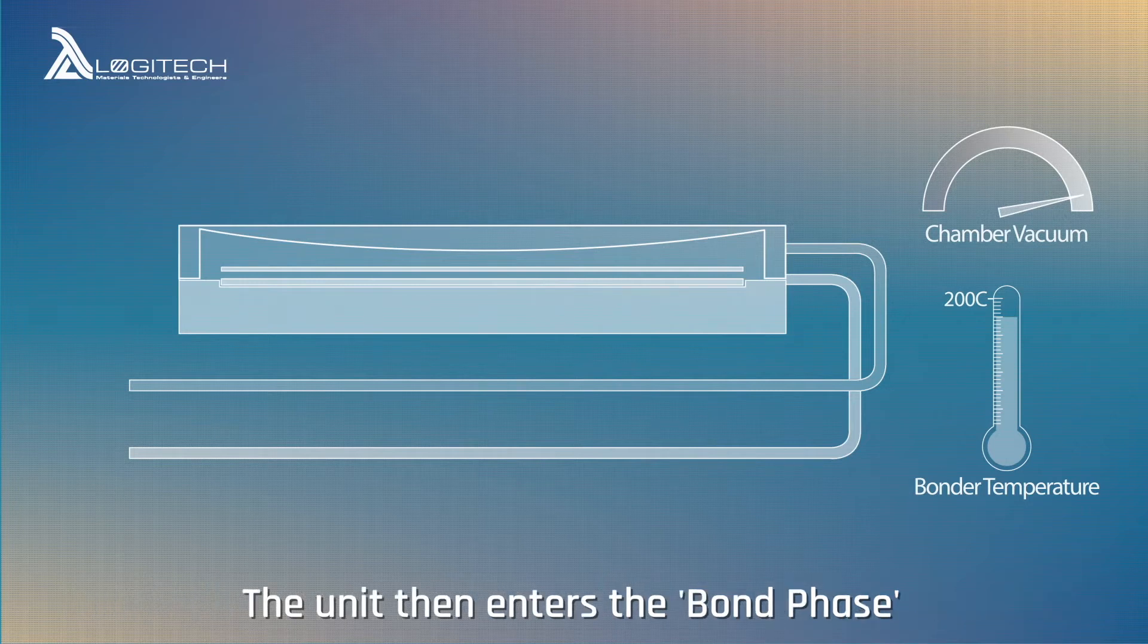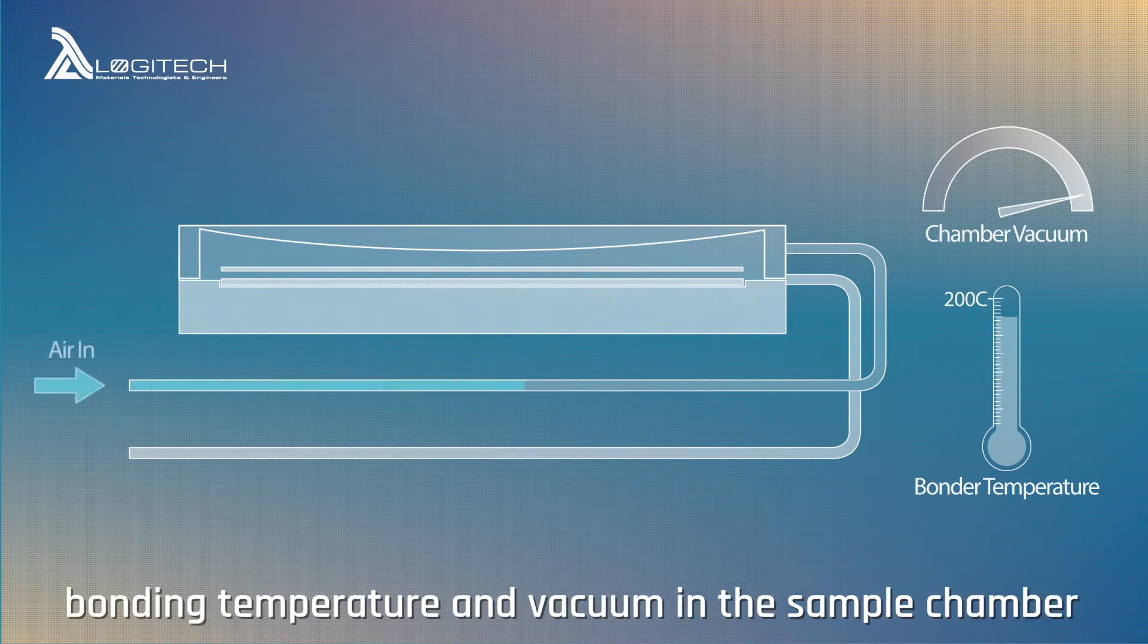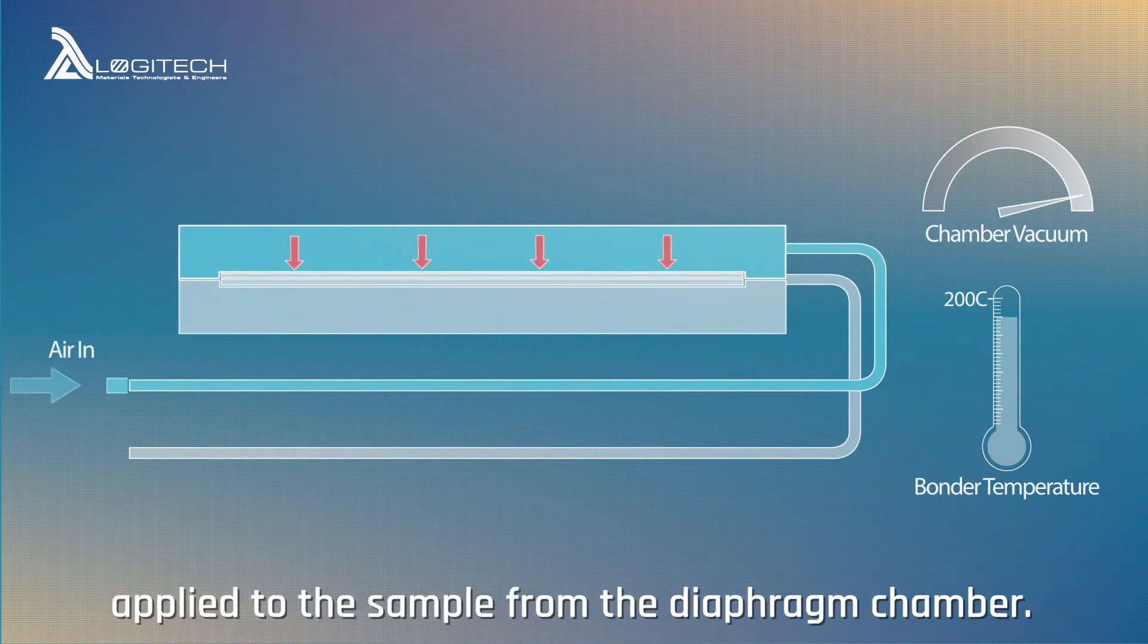The unit then enters the bond phase. Bonding temperature and vacuum in the sample chamber are both maintained while positive downward pressure is applied to the sample from the diaphragm chamber.